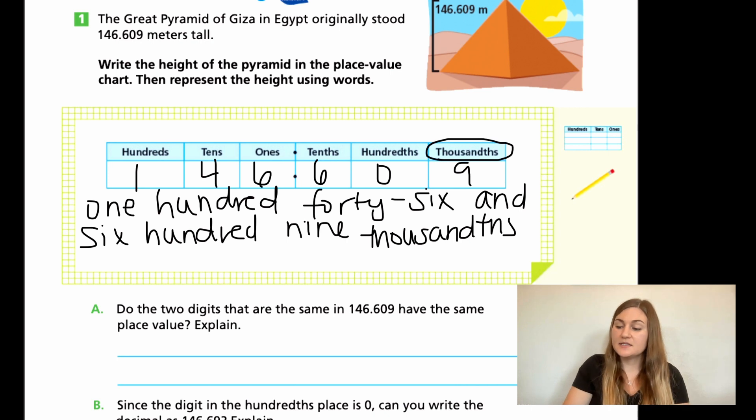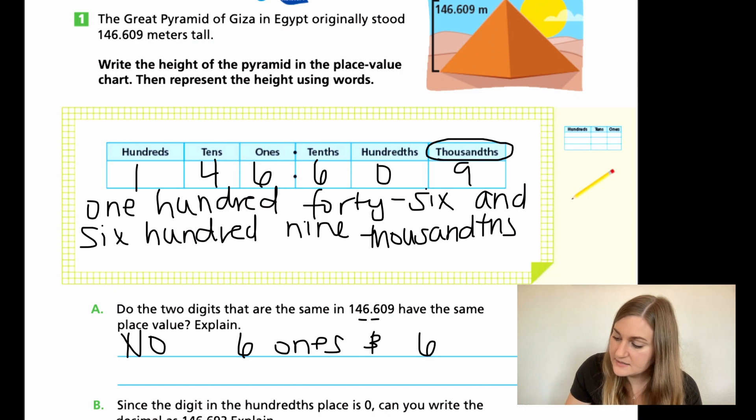Alright. And then going down to A, it says, do the two digits that are the same in 146 and 609 thousandths - that's the two sixes that they're talking about - do they have the same place value? Well, no, the first six is in the ones and the second six is in the tenths. So no, of course they don't have the same place value. So we would put no, because we have six ones and six tenths. So they are different.